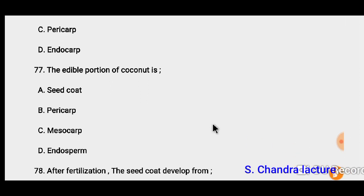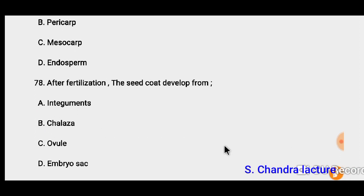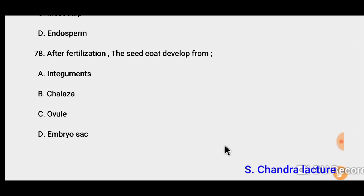Question 77: The edible portion of coconut is endosperm, not mesocarp. So the correct option is liquid endosperm. Question 78: After fertilization, the seed coat is developed from the integuments of ovules. So the correct option must be ovules.